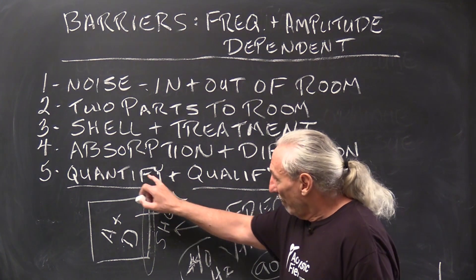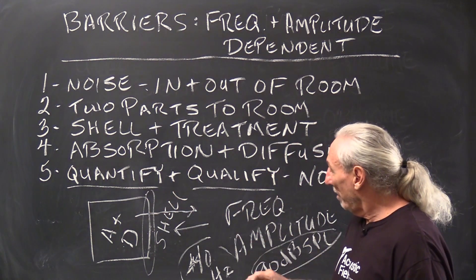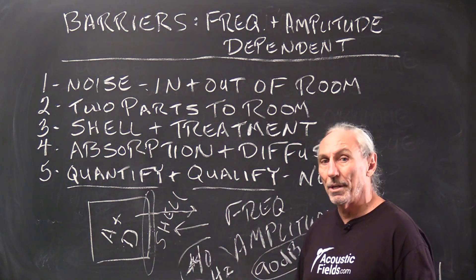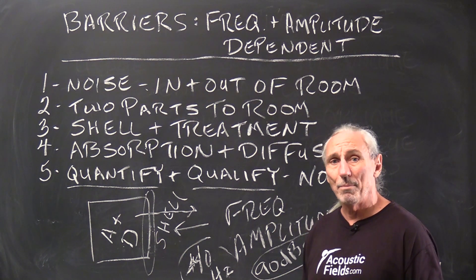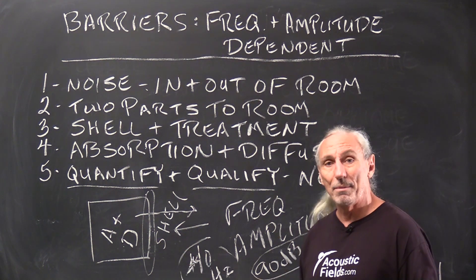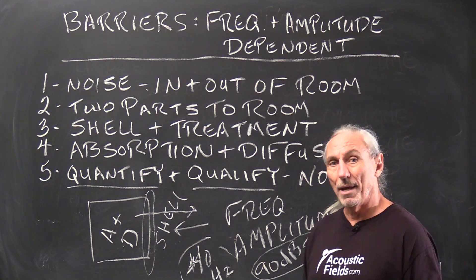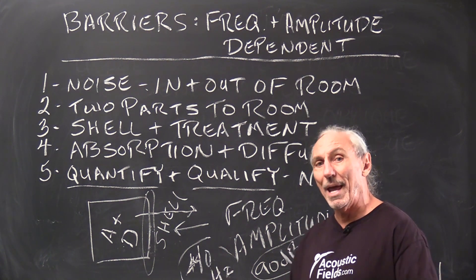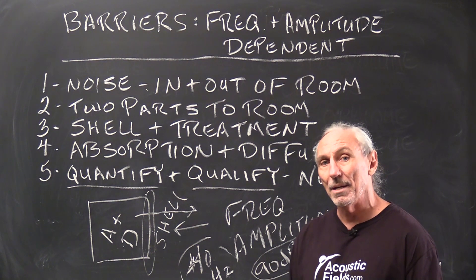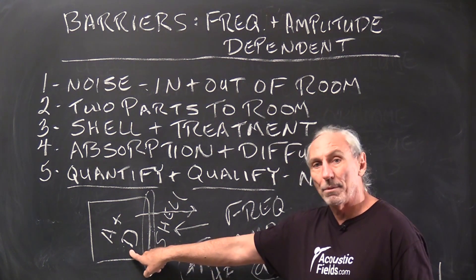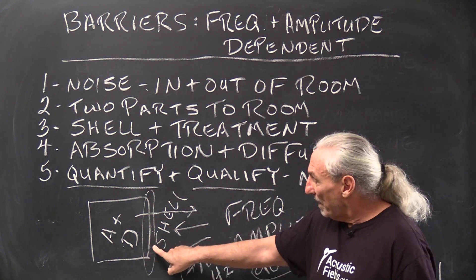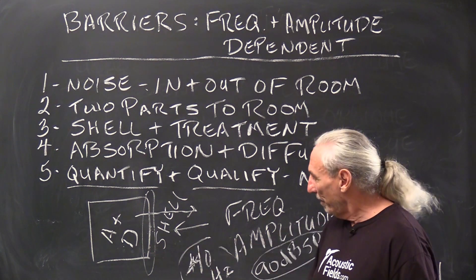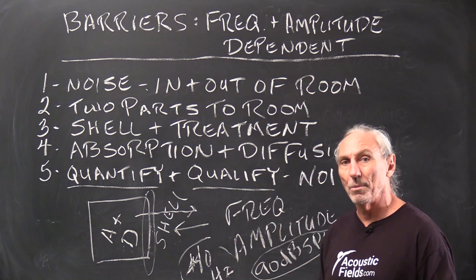So measuring, quantifying and qualifying takes all the guesswork out. Here's another thing with barriers. You don't spend any more money than you have to because it's a permanent build. You're not going to get that money back. And you don't want to spend more and add more materials than you need because you could use that money for absorption and diffusion. So you want to spend just enough to solve the problems once we identify the frequency and amplitude.